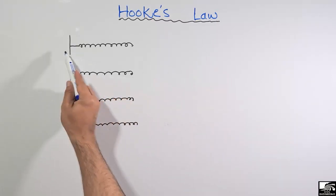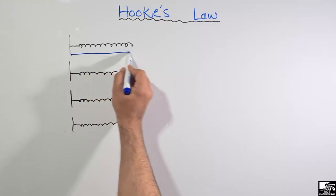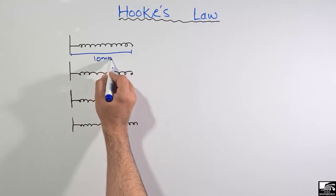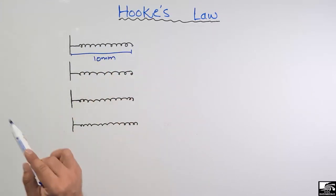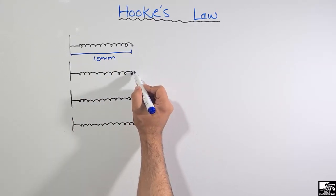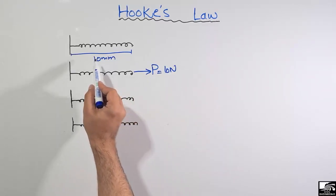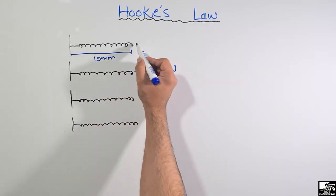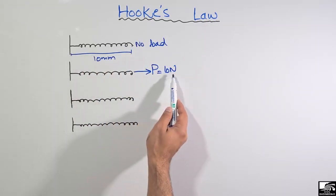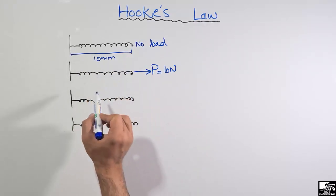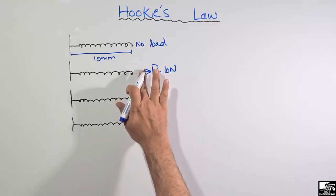To explain this law with an example, consider a spring attached to a fixed support. This spring has a length of 10 millimeters and there is no load acting on it in the first stage. In the second stage, a load of 10 Newtons is applied. Before the load, the spring length is 10 millimeters; when the 10 Newton load is applied, the spring with the same original length of 10 millimeters will show some deformation.